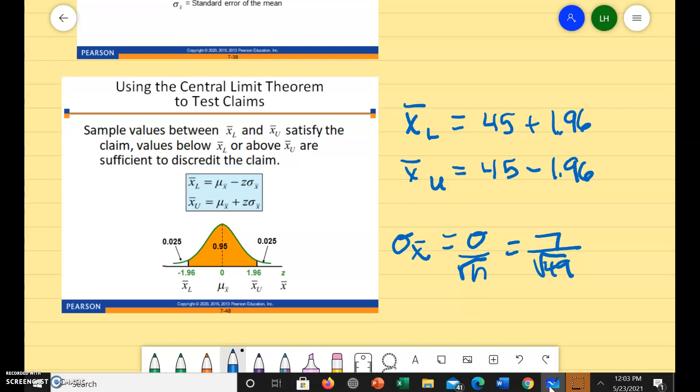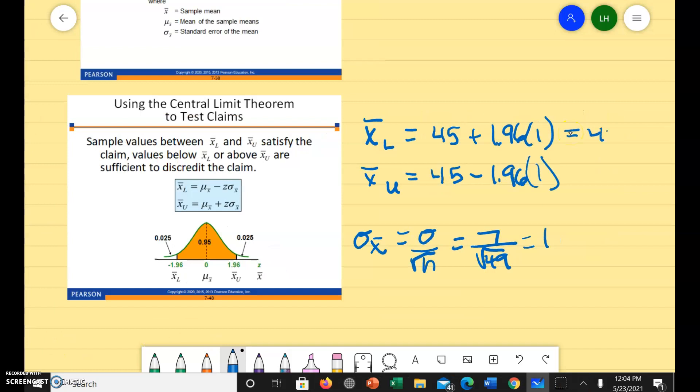So 7 divided by 7 is going to be 1. So we're going to do 45 plus 1.96 and 45 minus 1.96 times 1. So this would be 46.96 and this would be 43.04. So let's look at this.